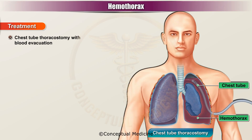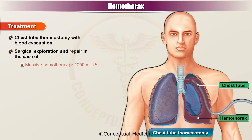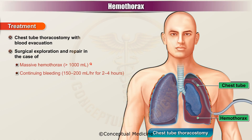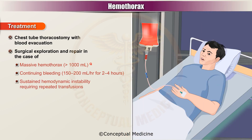The pleural hematocrit level is more than or equal to 50% of the patient's peripheral hematocrit level. Treatment involves chest tube thoracostomy with blood evacuation, and surgical exploration and repair in cases of massive hemothorax of more than 1000 ml, continuing bleeding of 150–200 ml per hour for 2–4 hours, or sustained hemodynamic instability requiring repeated transfusions.